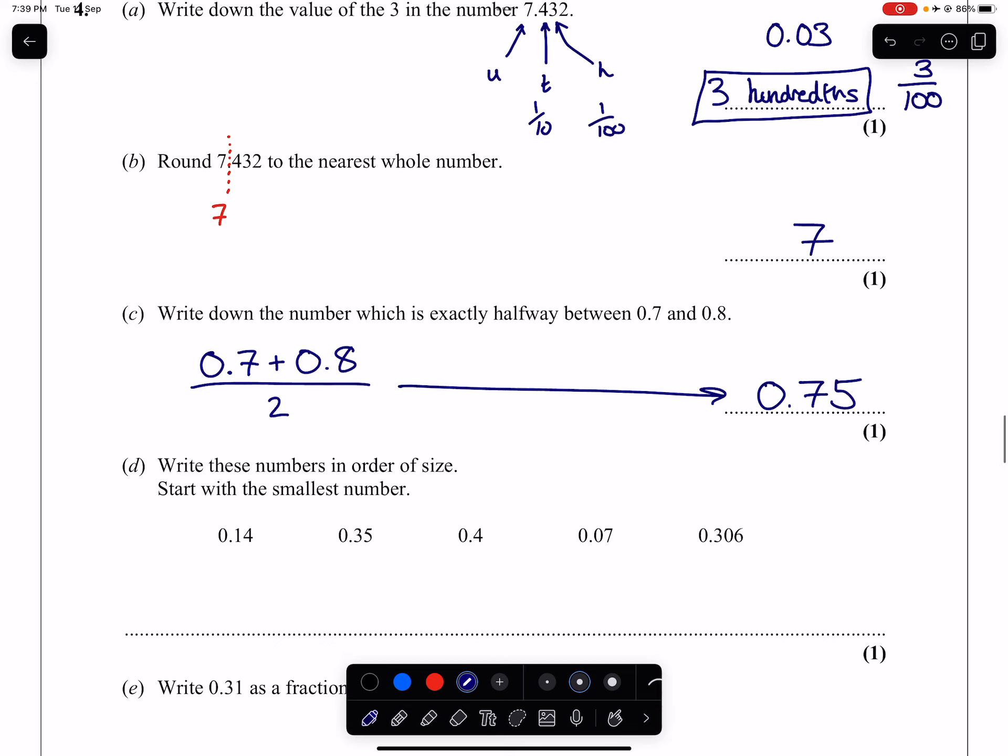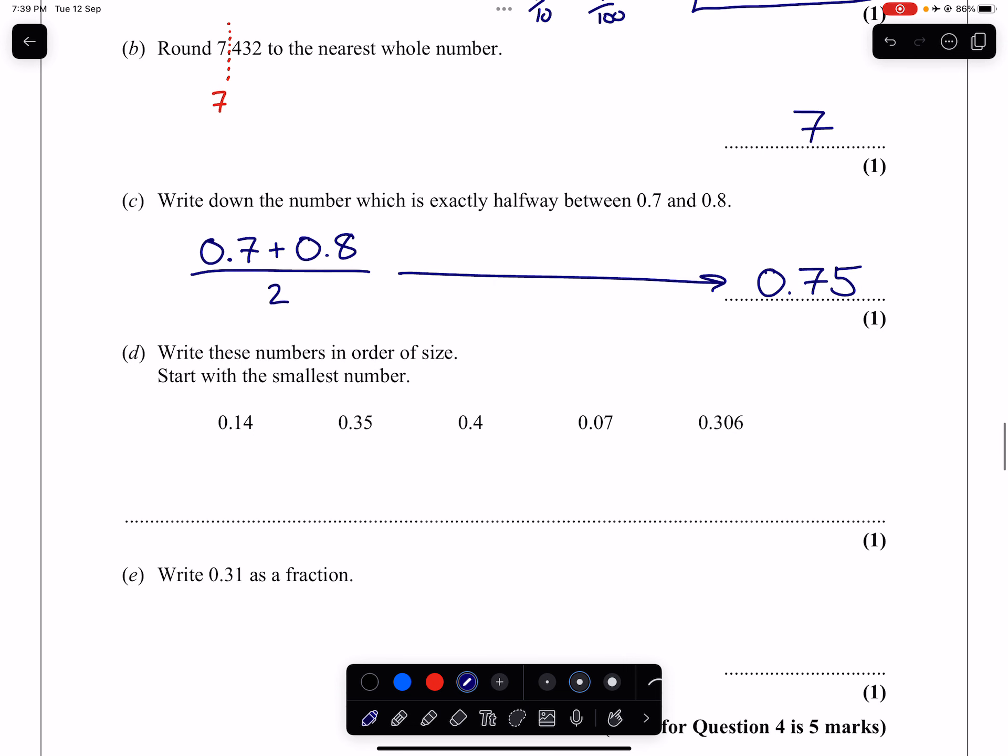Part D. Write these numbers in order of size. Start with the smallest number. So they all, at the very beginning of the number, have a 0. So there's nothing that differentiates any of the numbers from each other based on the first digit, the units column. If we look at the next digit, we have a 1 here, a 3 here, a 4, a 0, and a 3. So that 0 is going to tell us that that is going to be the smallest number because nothing is as small as that. No other number starts at 0.0.